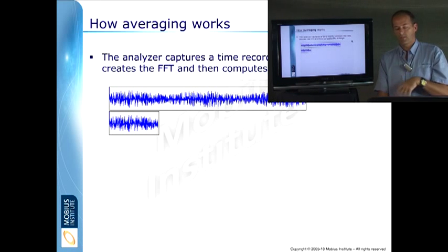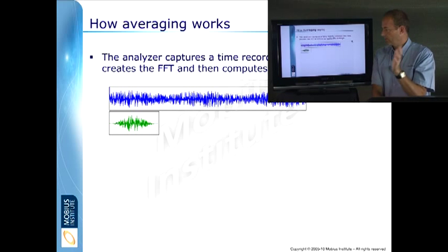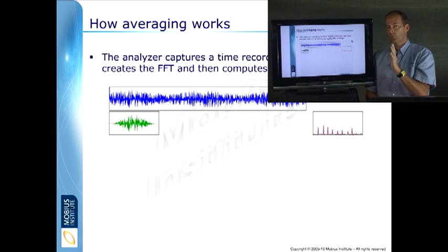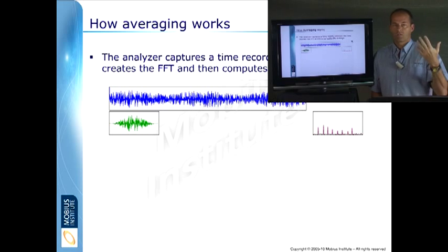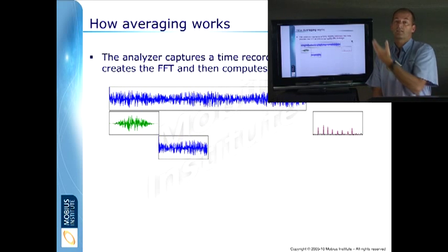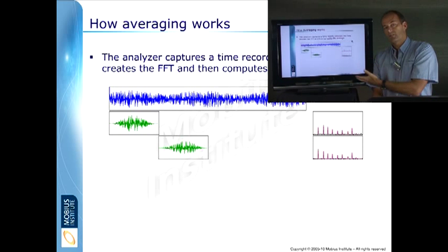It has to go through something called windowing, which we'll explain separately. But then from that it calculates the FFT. So we've got one spectrum. If we were to just do that, just one average, and repeat the measurement a moment later, we would definitely see variation in the spectrum. So that's not going to be enough. So the analyzer basically grabs another block of time, windows that and creates another FFT, another spectrum. And then it does it again.